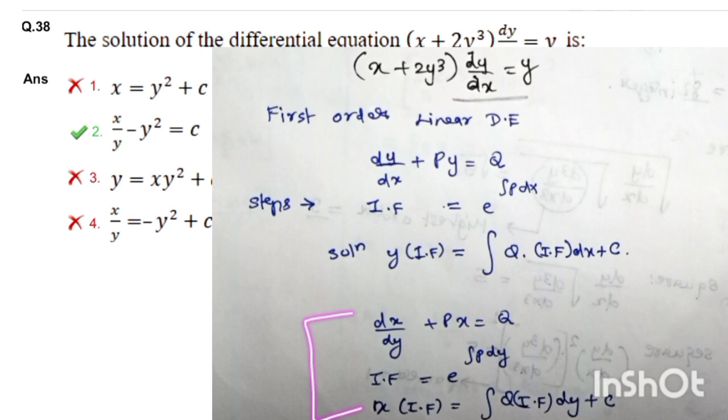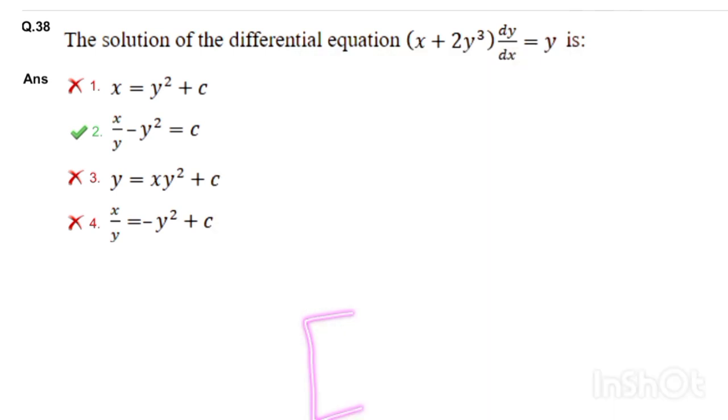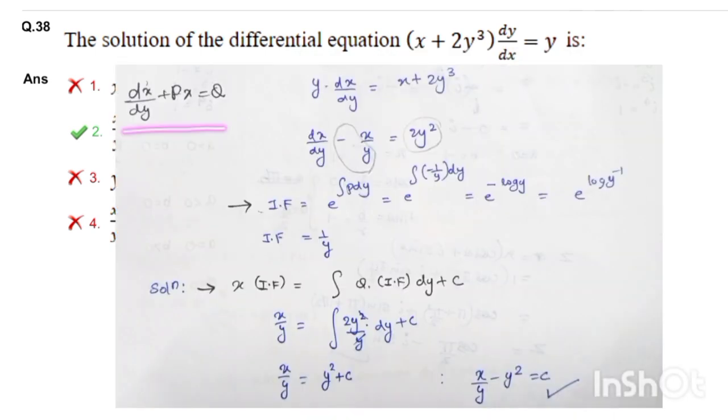So let's rearrange the equation: dx/dy - x/y = 2y². Here p is equal to -1/y.